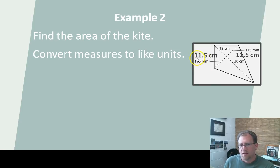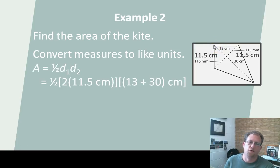Remember, there are 10 millimeters in a centimeter. So, 11.5 centimeters here, 11.5 centimeters there, 13 centimeters and 30 centimeters. I need this whole length because that's diagonal one. So, 13 plus 30 is 43. And then one-half times d₁ and d₂. Now, this is 11.5 centimeters. The whole thing then would be twice that. So the whole thing is 23 centimeters. And this whole thing is 43 centimeters. So, it's one-half times 23 times 43, which is 494.5 square centimeters.